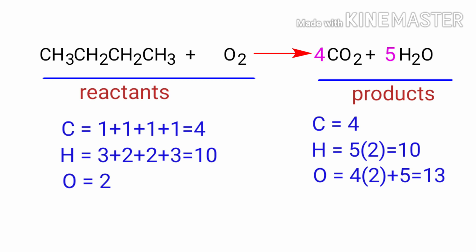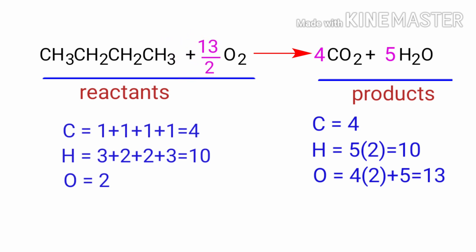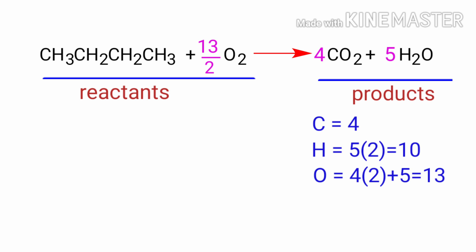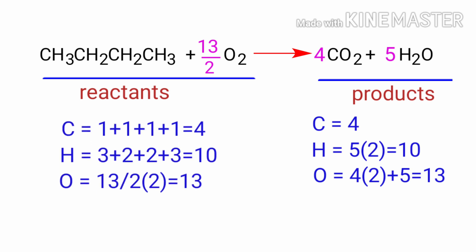Now we need to balance the Oxygen Atoms. To do this, we need to put a coefficient of 13/2 in front of O₂. In this equation, 13/2 is a rational number. We don't use a rational number for a molecule, so to get a whole number, we need to multiply the entire equation by a coefficient of 2.